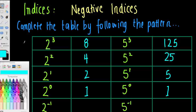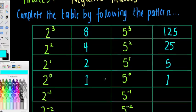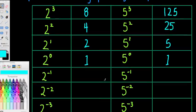Welcome back, Year 9. What we're looking at in this video are negative indices. To show you what negative indices mean, I'm going to look at this table here. This is similar to what I've done with the zero index, but we're going to continue our pattern all the way down to our negative indices.